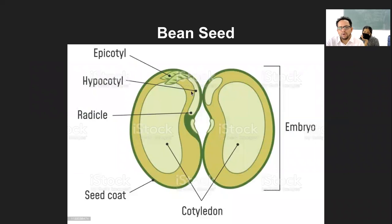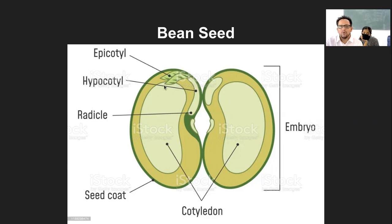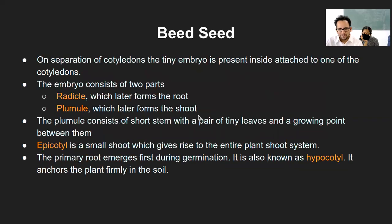The same is more clearly visible here. The end part of the embryo is the radicle and the upper part is known as the plumule. Simply remember: the upper part which grows into shoot is plumule, the lower part which grows into root is radicle. The plumule consists of a short stem with a pair of tiny leaves and a growing point between them.